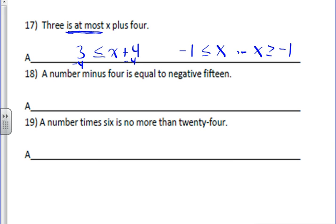On number 18, it says a number minus four is equal to. Equal to means just an equation. So you're going to put an equal sign there. A number, it doesn't matter what variable you do. So we'll do x minus four is equal to—well, what's it equal to? Negative 15.